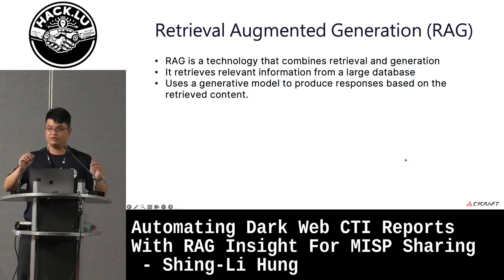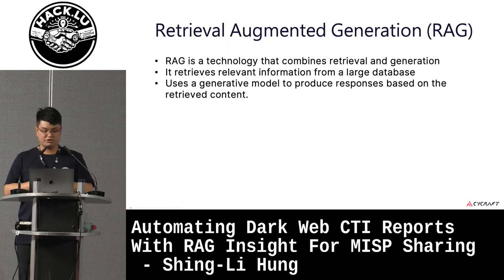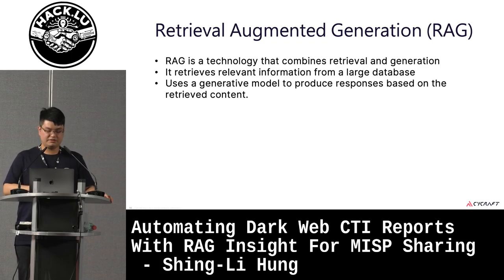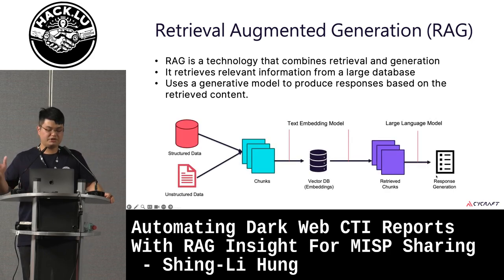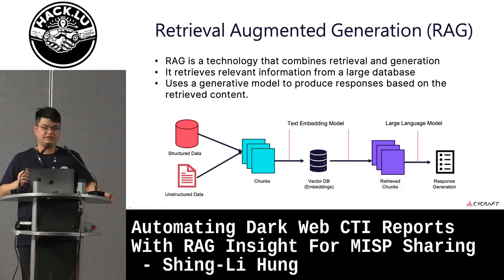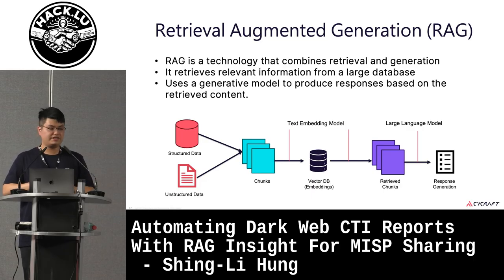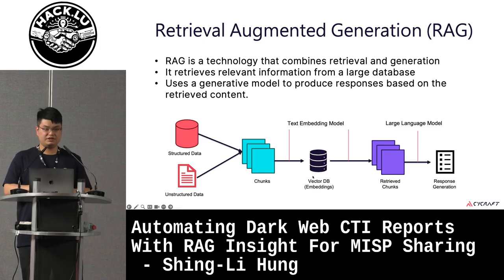Next is Retrieval-Augmented Generation, RAG. RAG has two stages: retrieval and generation. It retrieves relevant information from a large database and uses a generative model to produce a response based on the retrieved content. We have structured and unstructured data, split into chunks — small pieces of data — stored in a vector database. With a segmented query, the database returns the retrieved chunks, and finally we generate a new prompt for the LLM.